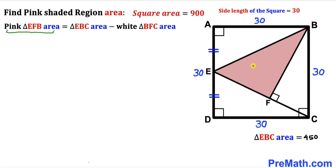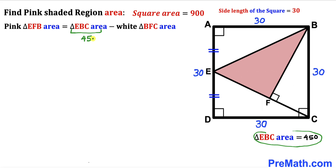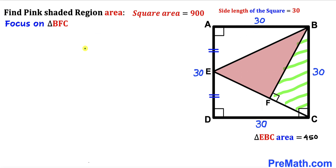Now let's observe that the area of pink triangle EFB is going to equal the area of the big triangle EBC minus the area of the white triangle BFC. We know the area of triangle EBC is 450, so our task now is to calculate the area of the white triangle BFC.